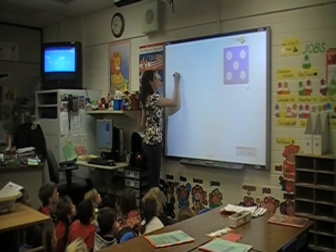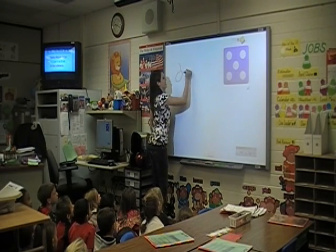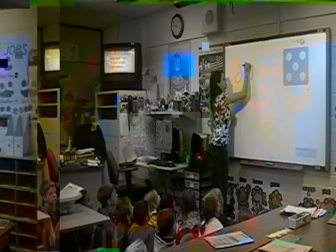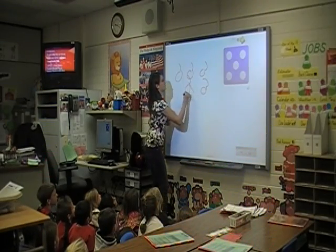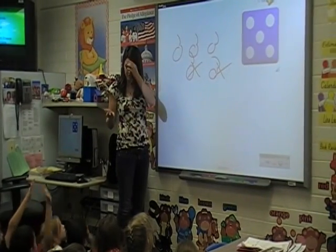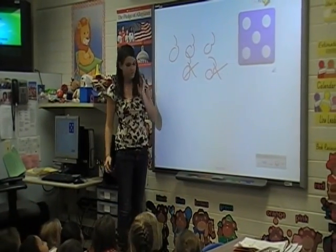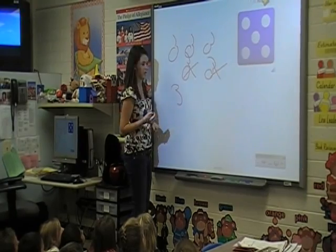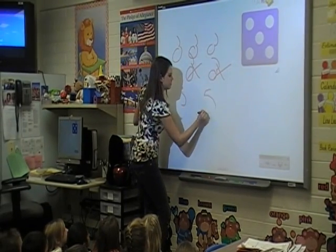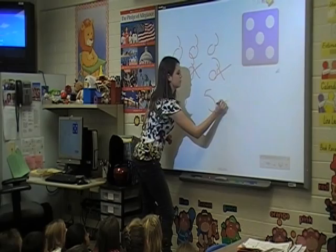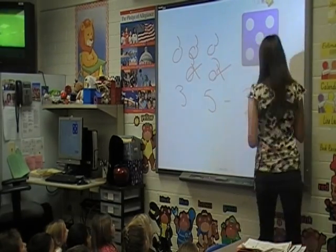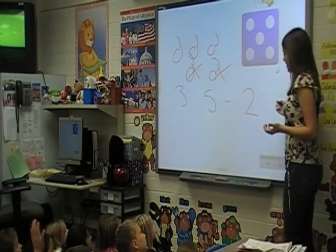Let's say I have five ornaments. And then two of them break. So how many do I have left? Three, that's right. And then we're going to write out the number sentence. First we have five ornaments, and then we minus two of them. So that equals? Three. Right.